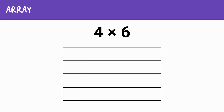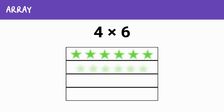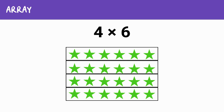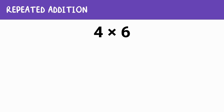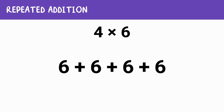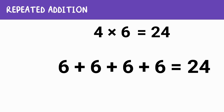Next, we'll use an array. We'll create four rows with six items in each row — four rows because we're multiplying by four, and six items in each row. When we count all the items together, we still get 24. So again, four times six equals 24. Now let's use repeated addition. Instead of multiplying, we can add six four times: six plus six plus six plus six. Six plus six equals 12, plus six more is 18, and six more is 24. When we add them together, we get 24. So four times six is 24 using repeated addition too.